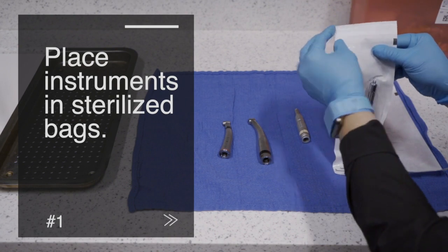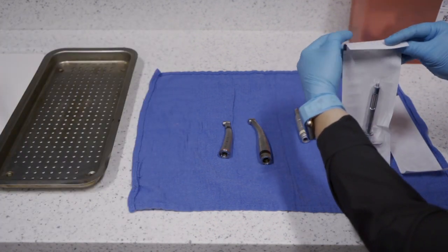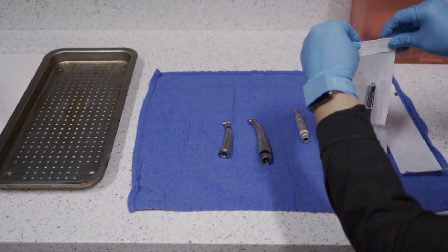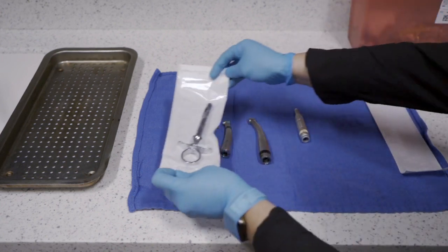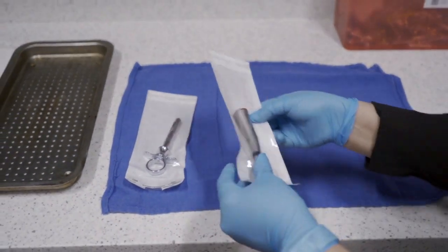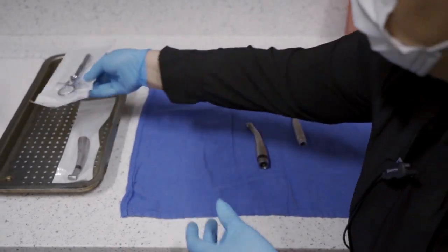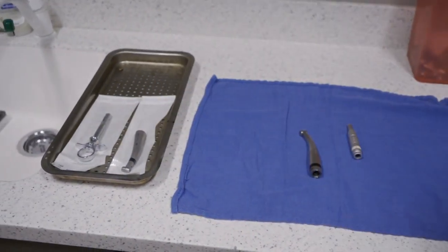Grab a sterilization bag—there are different sizes depending on what instrument you're loading. Place the instrument in the sterilization pouch and seal it at the top. Place the instruments on the tray with the open side up before placing them into the M11.